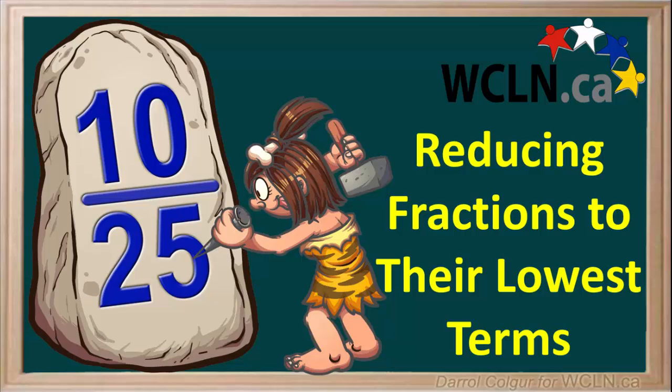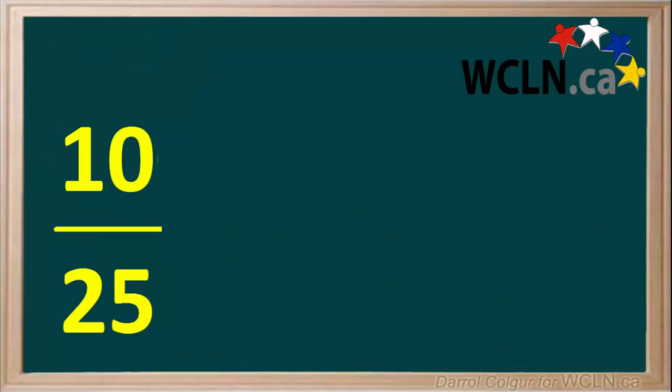We can make fractions easier to work with by reducing them to their lowest terms. Let's see how this works. Let's say we're given the fraction 10 25ths.